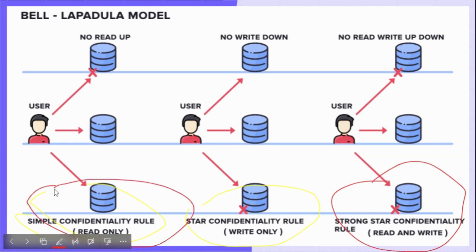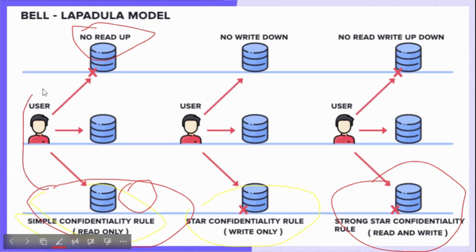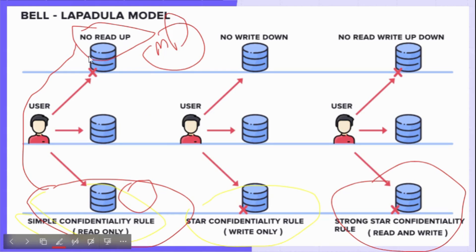In the Simple Security Rule, there is no read up. For example, if one person is working as a Managing Director in a company and another person is working as a Sales Executive, if the Sales Executive can have access to all the documents of the Managing Director, the documents will not be confidential. This creates a problem in the company.